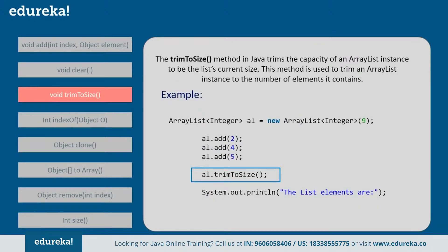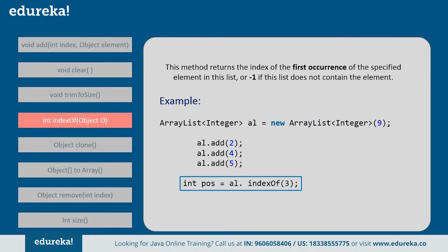Next, trimToSize — this method trims the capacity of an ArrayList instance to the list's current size. That is, if you are creating an ArrayList of size 9 and adding only three elements, on calling trimToSize it trims the size of the ArrayList from 9 to 3. Next, indexOf — this method returns the index of the first occurrence of the specified element in the list. If that element is not present in the list, it returns -1. Suppose if you want to return the index of 5 and you write 5, then it will return index 2. But if you try to find the index of 3, which is not present in the ArrayList, then it will return -1.